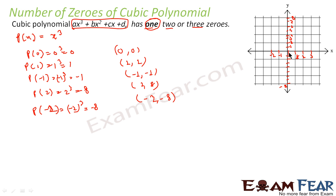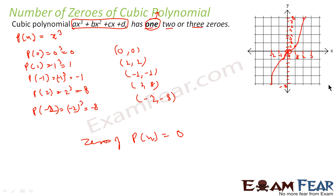The first point is (0,0). The second point is (1,1). The third point is (-1,-1). The fourth point is (2,8). The fifth point is (-2,-8). If you join these points, you get a curve that meets the x-axis at one point, which is (0,0). So we say it has one zero, and the value of that zero is 0. Note: the number of zeros and the value of the zero are different things — the zero of this px is 0, and the number of zeros is 1.